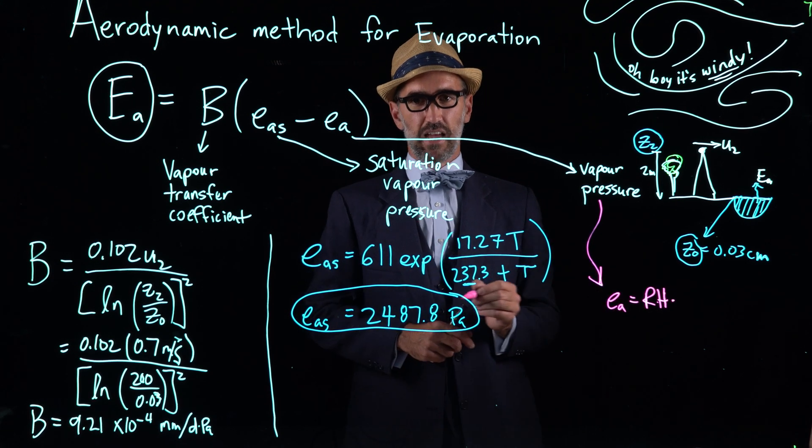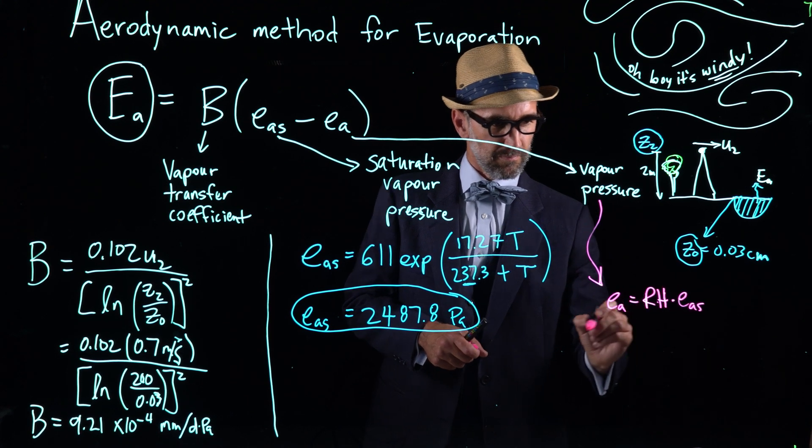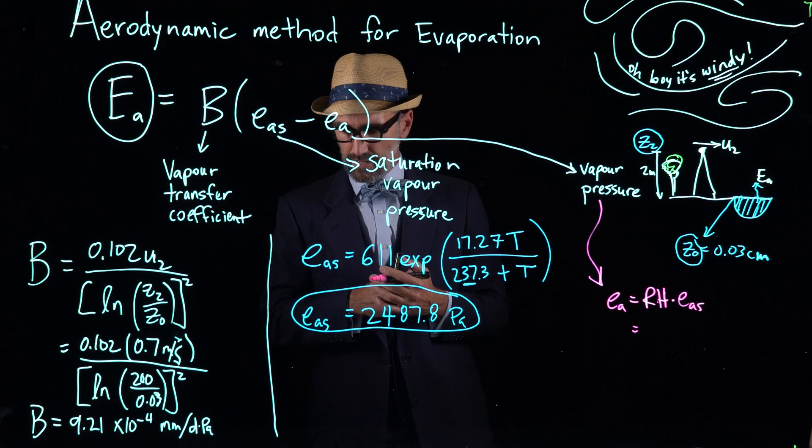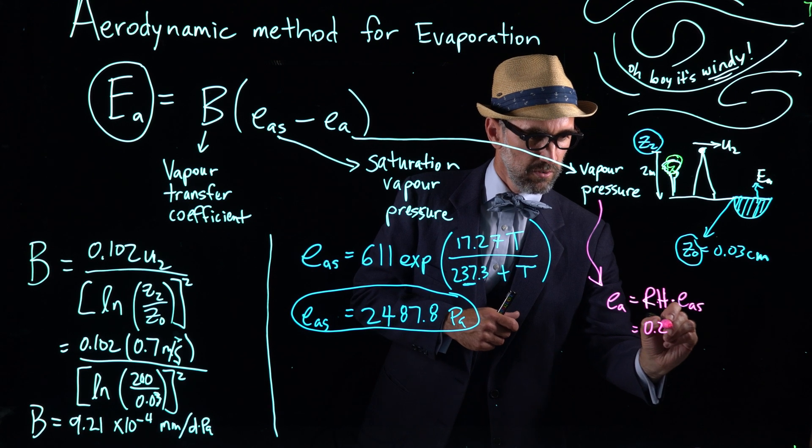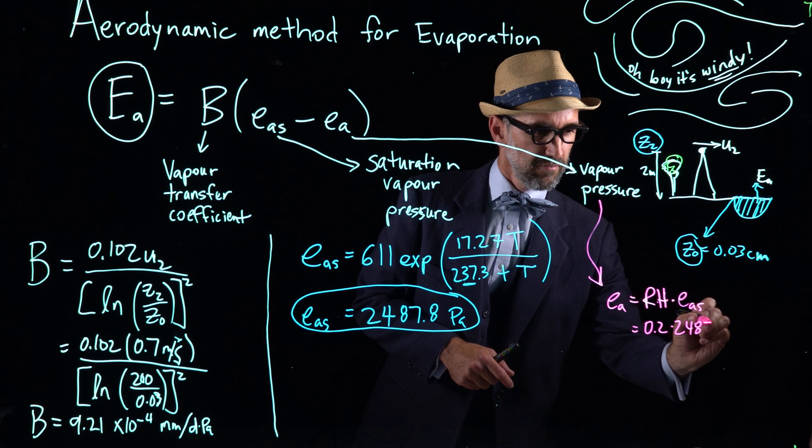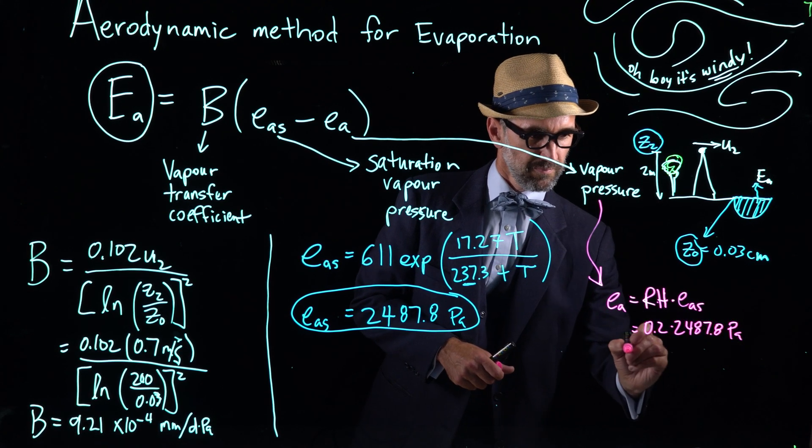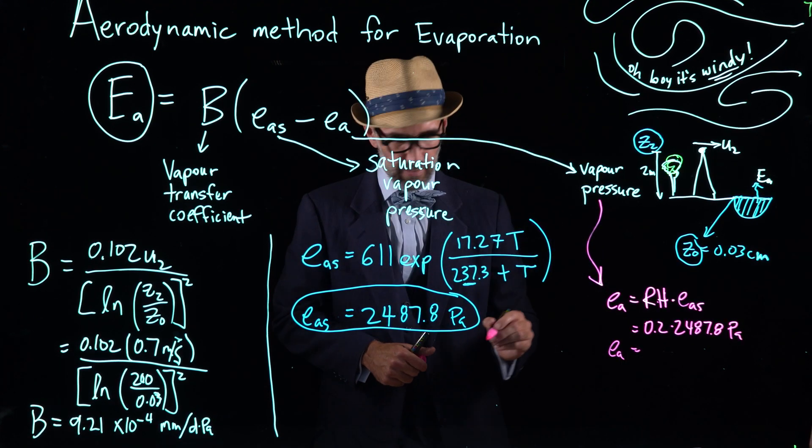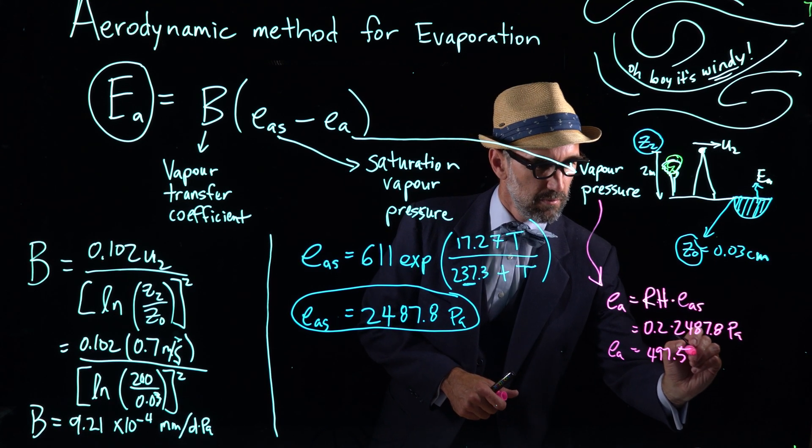And vapor pressure is a function of the relative humidity. So small e sub A is the relative humidity times the saturation vapor pressure, e sub AS. And so the relative humidity long-term average for Phoenix is 20%, so 0.2 times this 2487.8 pascals. So our vapor pressure, our e of A, is 497.5 pascals.